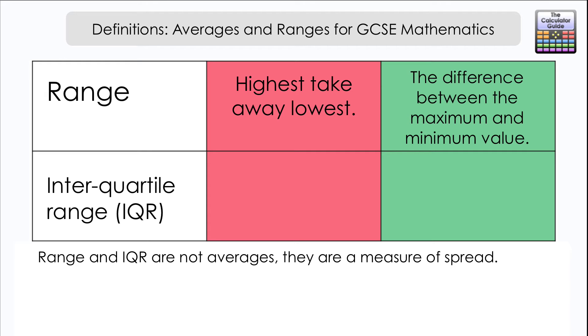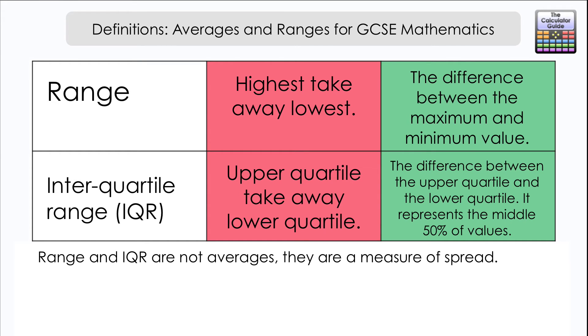You may also be required to find or use interquartile range. Again, I often get 'the upper quartile take away lower quartile.' Let's change that to a more mathematical definition. It's the difference between the upper quartile and the lower quartile, and it represents the middle 50% of the values.